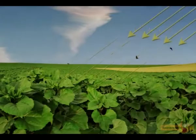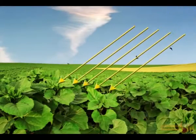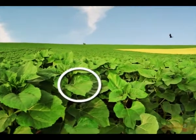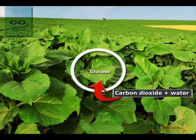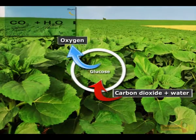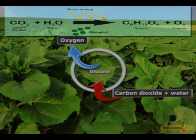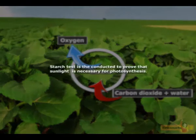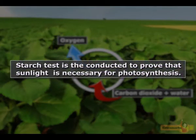Photosynthesis is the natural process occurring in green plants that converts solar energy to chemical energy and releases oxygen into the atmosphere. A starch test is conducted to prove that sunlight is necessary for photosynthesis.